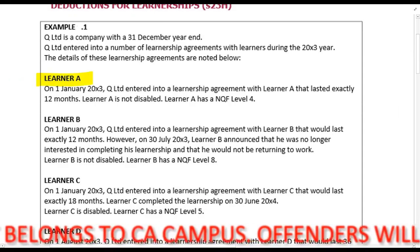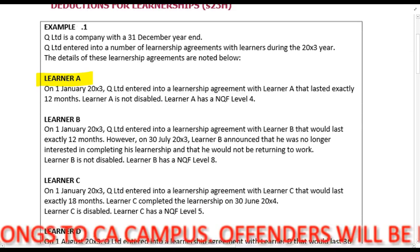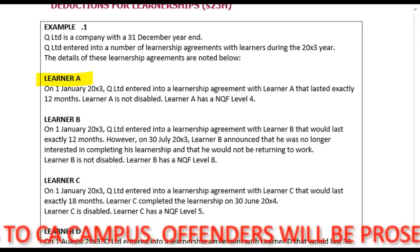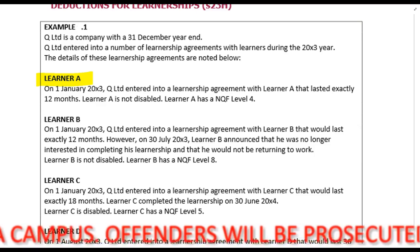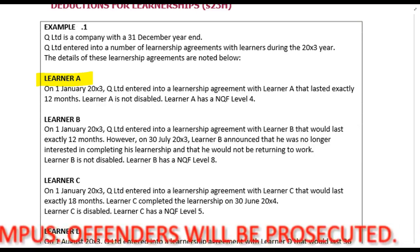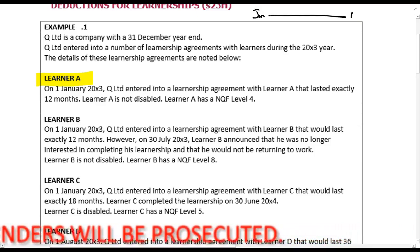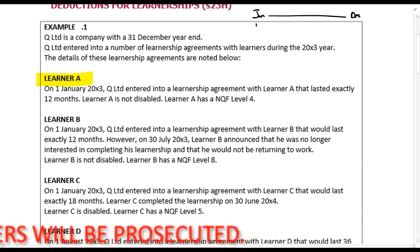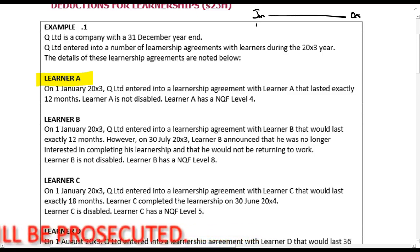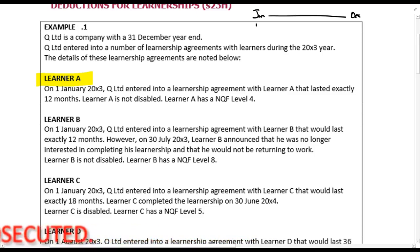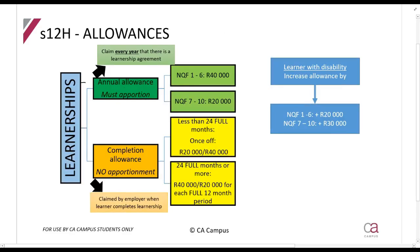Let's look at Learner A. On the 1st of January 20X3, Q Limited entered into a learnership agreement with Learner A that lasted exactly 12 months. Learner A is not disabled and has an NQF level 4. The tax year runs from January until December, so they entered into a 12-month contract that lasted exactly 12 months within the tax year.